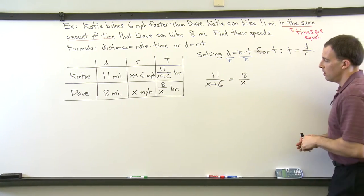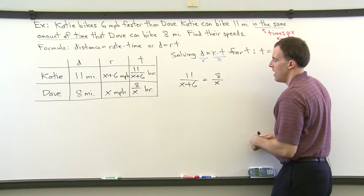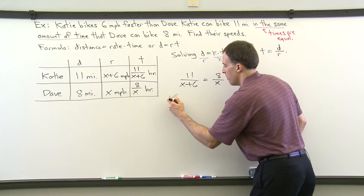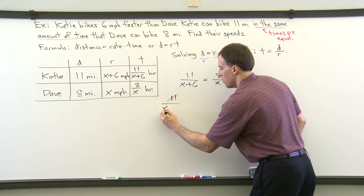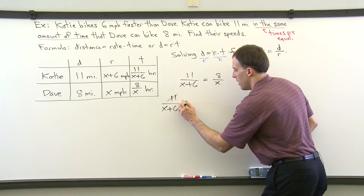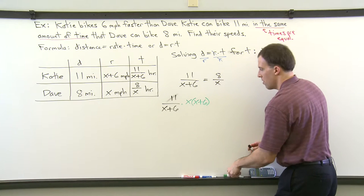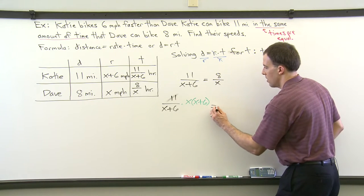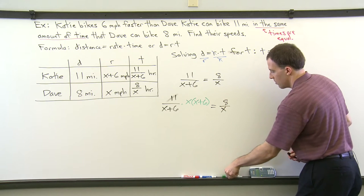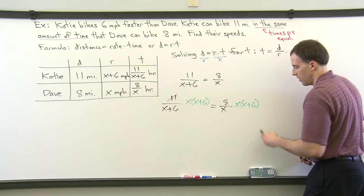To solve this equation, we've got to first of all clear the fractions by multiplying both sides by X plus 6 and X. So I'm going to show that I'm multiplying on both sides here by both denominators. I'm going to take 11 over X plus 6 and show that I'm multiplying it by X and X plus 6. This is in order to clear both denominators, to clear the fractions. And then on the right hand side, we're taking 8 over X and multiplying it by X times X plus 6 to clear both fractions.